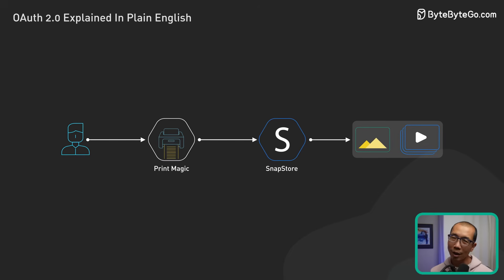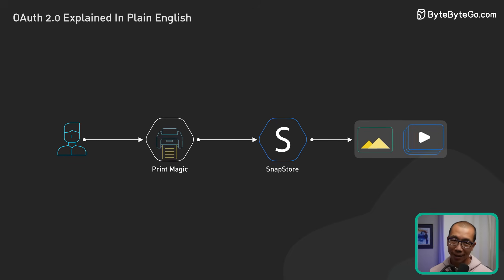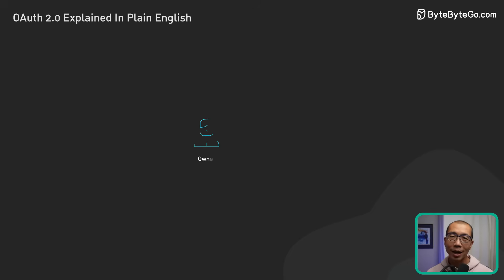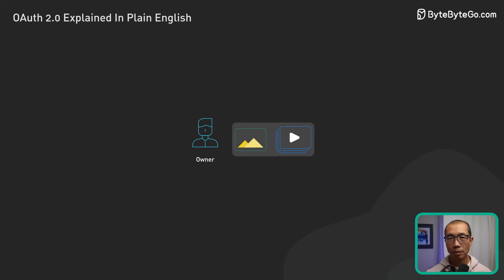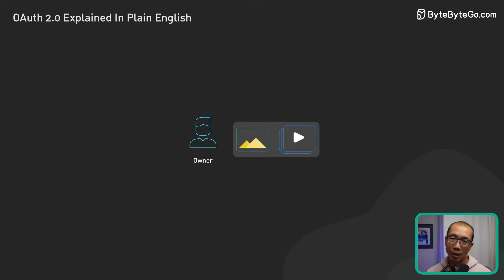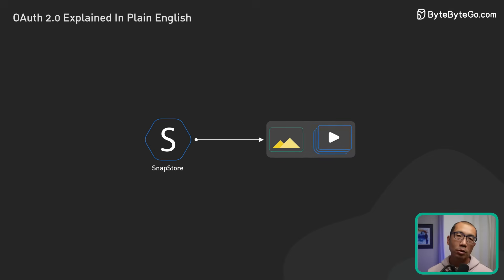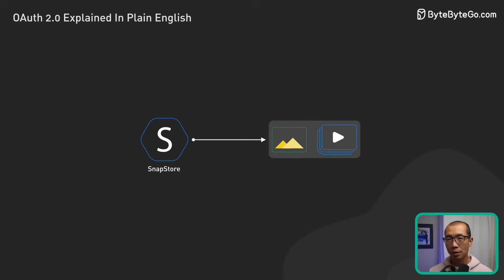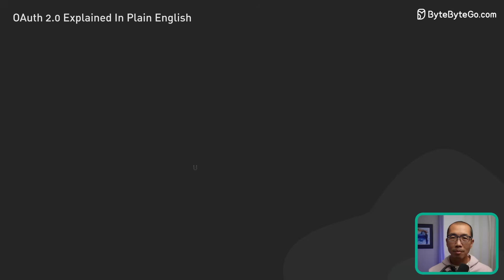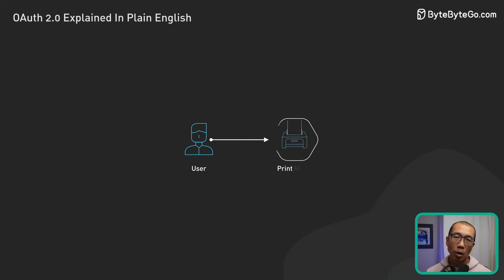Now let's unpack this further. In this context, we are the resource owner because we own our photos on SnapStore. SnapStore is the resource server that stores our photos. PrintMagic is the client that wants to access the photos.